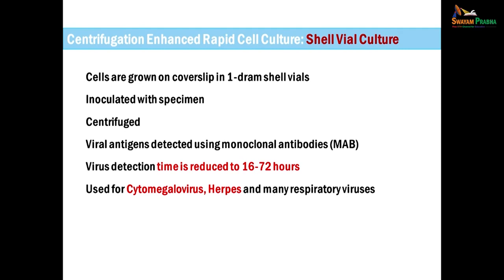An advancement to enhance the rapidity of cell culture is centrifugation-enhanced rapid cell culture, also known as shell vial culture. It is similar to conventional cell culture, but cells are grown on a coverslip in small vials. After inoculation of the specimen, centrifugation is carried out so that the virus immediately gets attached to the cells. Growth is detected using monoclonal antibodies. This technique can be used for rapid detection of viruses like cytomegalovirus and herpesvirus.